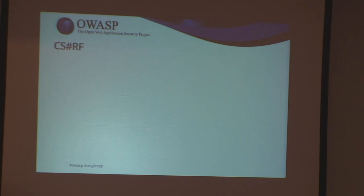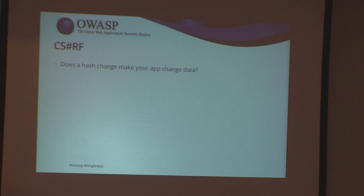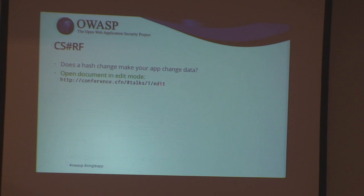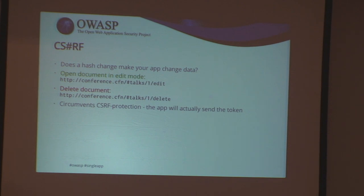When doing research for this, I discovered a kind of new type of CSRF which I dubbed CSHRF, because it's somewhat different from normal CSRF attacks. The problem occurs because we're using these JavaScript frameworks — if a hash change, simply changing the URL, makes a change of data in your app, you have a problem. In this URL we're opening a presentation in edit mode — that doesn't change data, so that's okay. But if a hash change will actually delete something, then we have a problem, and this circumvents normal CSRF protection.